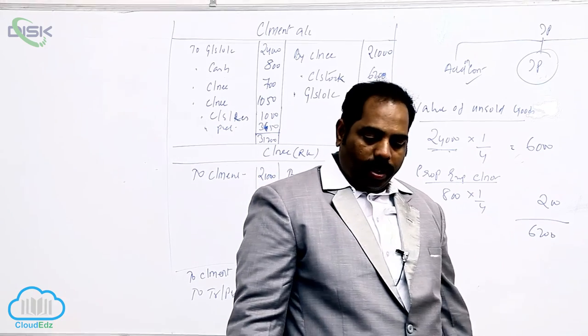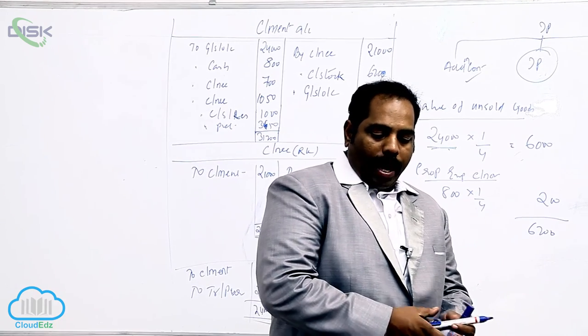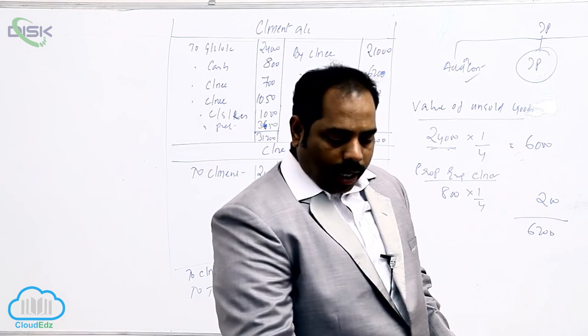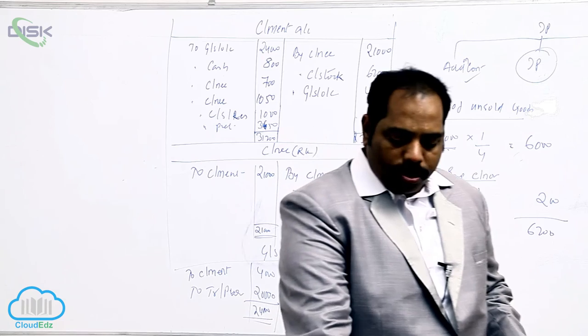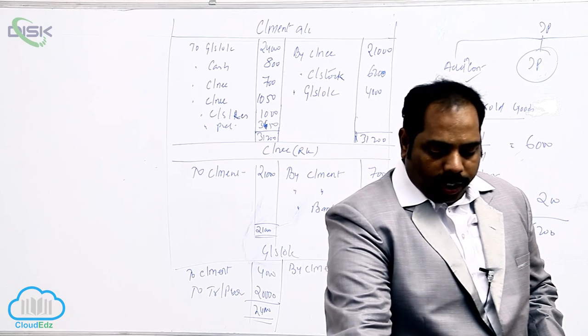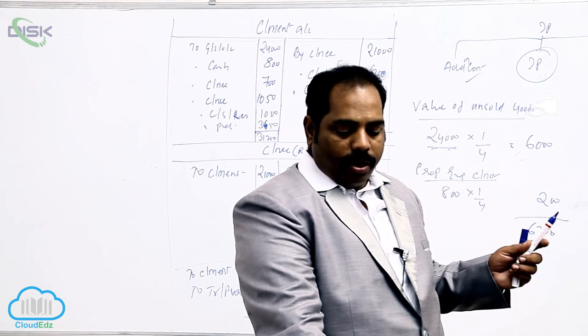Next, 15th one. Gopal of Chennai consigned 10,000 cases of tinned fruits costing 75,000 to Kiran of Kanpur on 1-1-2015.